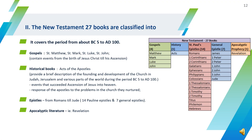Now let us learn about the New Testament books. It covers the period from about BC 5 to AD 100. The 27 books are classified into groups starting with the Gospels of Matthew, Mark, Luke, and John, containing events from the birth of Jesus Christ till his ascension. This is followed by the Acts of the Apostles, which covers the events succeeding the ascension of Jesus into heaven, the coming of the Holy Spirit, the founding of the early church, and the response of the Apostles to problems in the church. Then we have the epistles or letters from Romans till Jude — 14 Pauline epistles followed by 7 general epistles. The New Testament ends with apocalyptic literature, that is the Revelation to John. We will be learning in detail about the epistles and Revelation in chapters 6, 8, and 9.